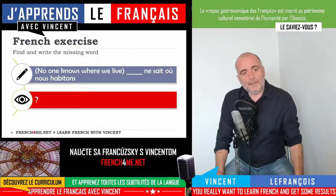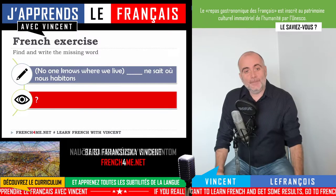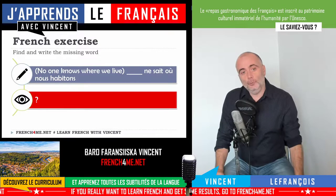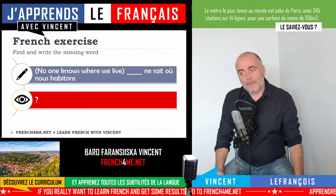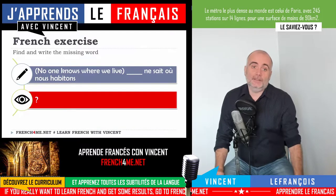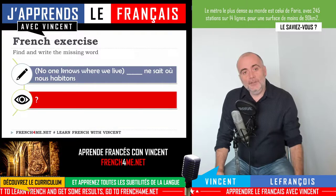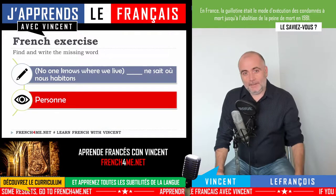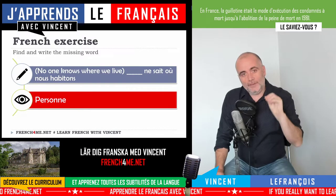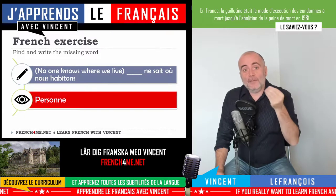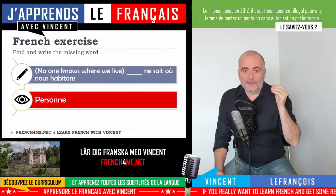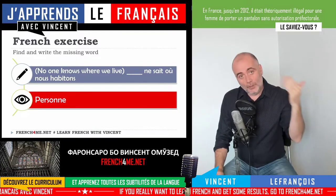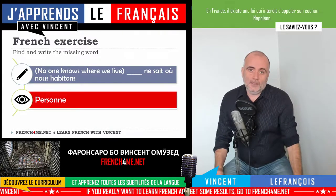No one knows where we live. Something is missing and after that it's 'ne sait où nous habitons'. So how could we translate 'no one' in French? No one in French is 'personne'. Keep in mind that 'personne' will always be used with the first part of the negative form: 'ne'. In that case it's the subject, so 'ne' must come right after.